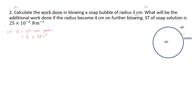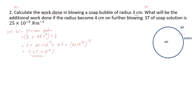The work done is producing area over two different surfaces. Therefore, work done equals 2 × surface tension × area produced. Surface tension is 25 × 10⁻³, and the area produced is 4π × (3 × 10⁻²)² meters squared. The answer is 5.65 × 10⁻⁴ Joules. This much energy has to be blown into the soap film so that it forms a soap bubble of radius 3 cm.